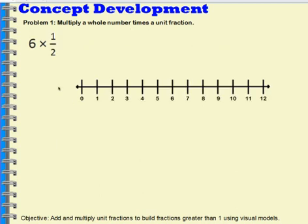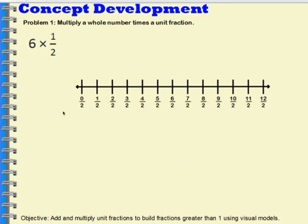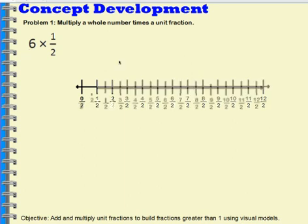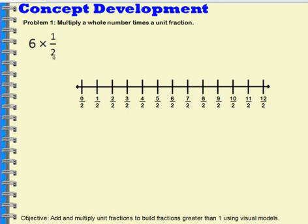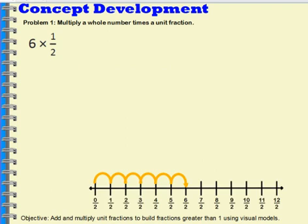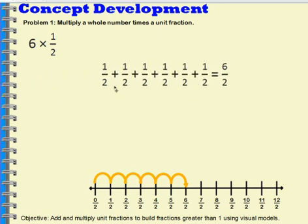This same idea can be transferred to 6 times 1 half. If we think about using our number line to count halves instead of wholes, we can easily transfer the thinking we were doing with the jumps before. Now I have 6 times 1 half, meaning I'm going to have 6 jumps, but those jumps are going to be 1 half each. So I'm going to end at 6 halves. We can also see this with an addition sentence: 1 half plus 1 half plus 1 half plus 1 half plus 1 half plus 1 half equals 6 halves.